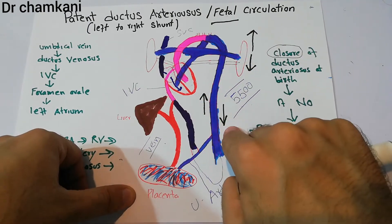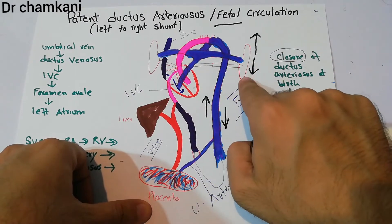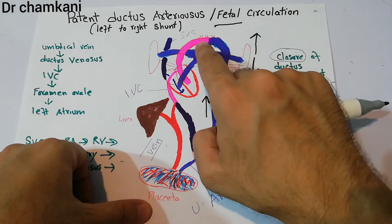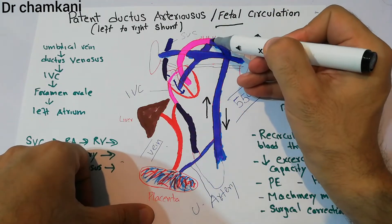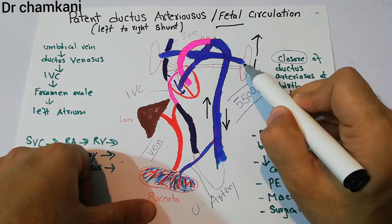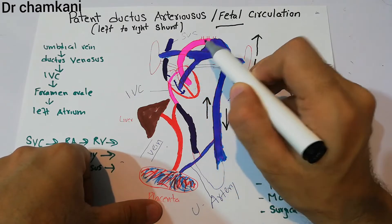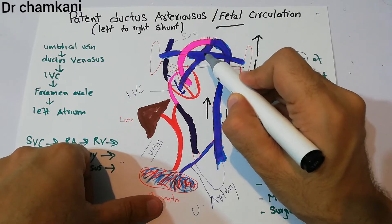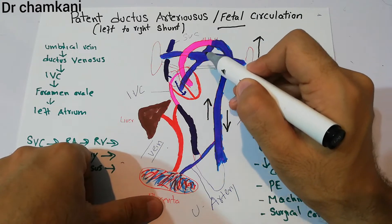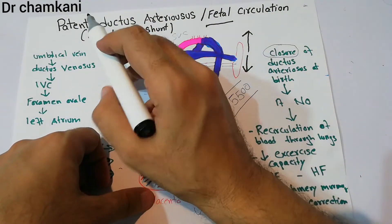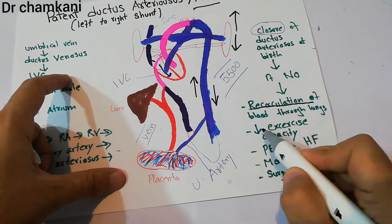After birth, with lower lung pressure and higher aortic pressure, blood that previously moved from pulmonary artery to aorta now reverses: it flows from the aorta into the pulmonary artery and back into the lungs. It gets oxygenated again, returns to the left atrium, left ventricle, back into the aorta, and some portion keeps returning through the patent ductus into the pulmonary artery — creating a continuous recirculation of blood through the lungs.